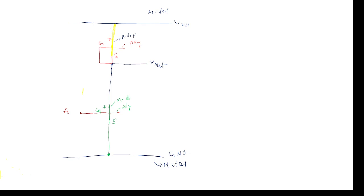This is the way to draw the stick diagrams. We can assume source, gate, drain on one side, or on the other side also we can assume source, gate, drain — both methods are correct to draw the stick diagram. So this is the stick diagram for the NMOS inverter. Now I will go with the mask layout diagram.